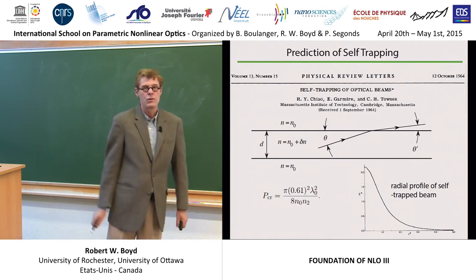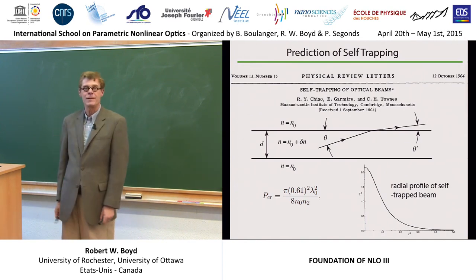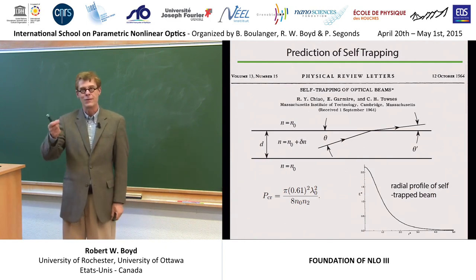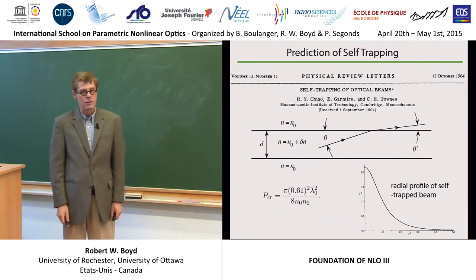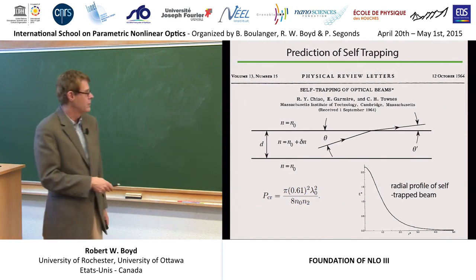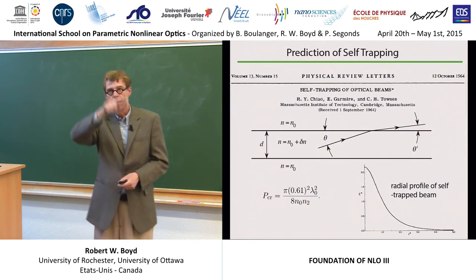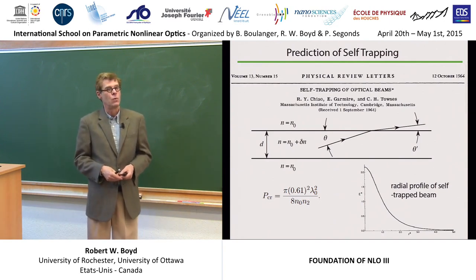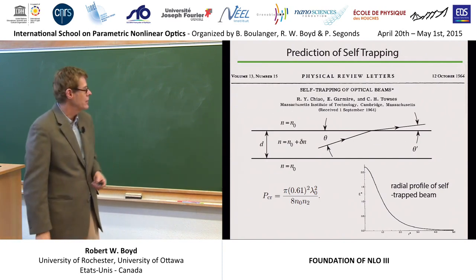This perhaps makes anybody with common sense suspect that this type of self-trapping is not stable. Because if the power has to have exactly the right value, it tells you that if there's a small fluctuation in the power, things will go wrong. If the power fluctuates upward, the beam will collapse. If the power fluctuates downward, the beam will be expelled from the fiber. In fact, that intuition is correct: self-trapping in two transverse dimensions is unstable. As it turns out, self-trapping in one transverse dimension is stable, and I bet that will be pursued in talks you'll hear later this week.